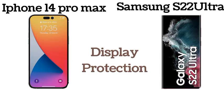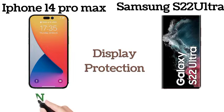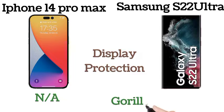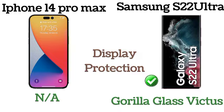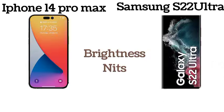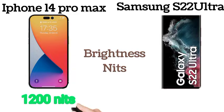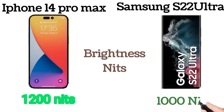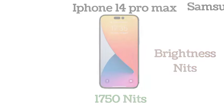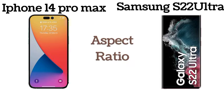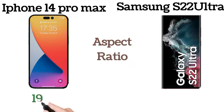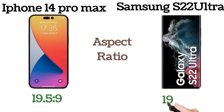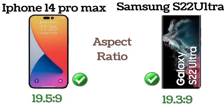Here is the display protection for both phones. The iPhone 14 Pro Max has 1200 nits brightness and the S22 Ultra has 1000 nits. Here are the aspect ratios of the iPhone 14 Pro Max and Samsung S22 Ultra.